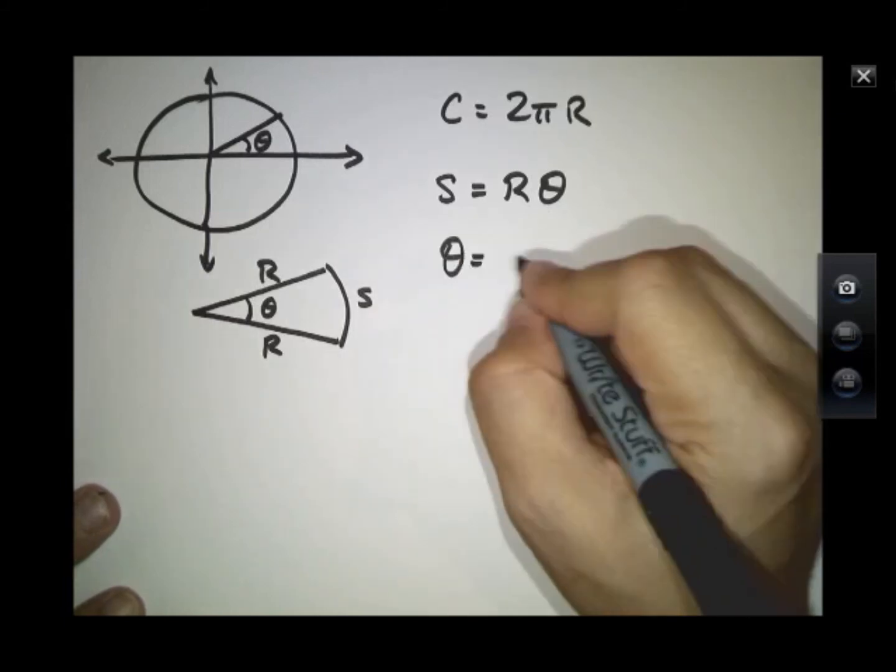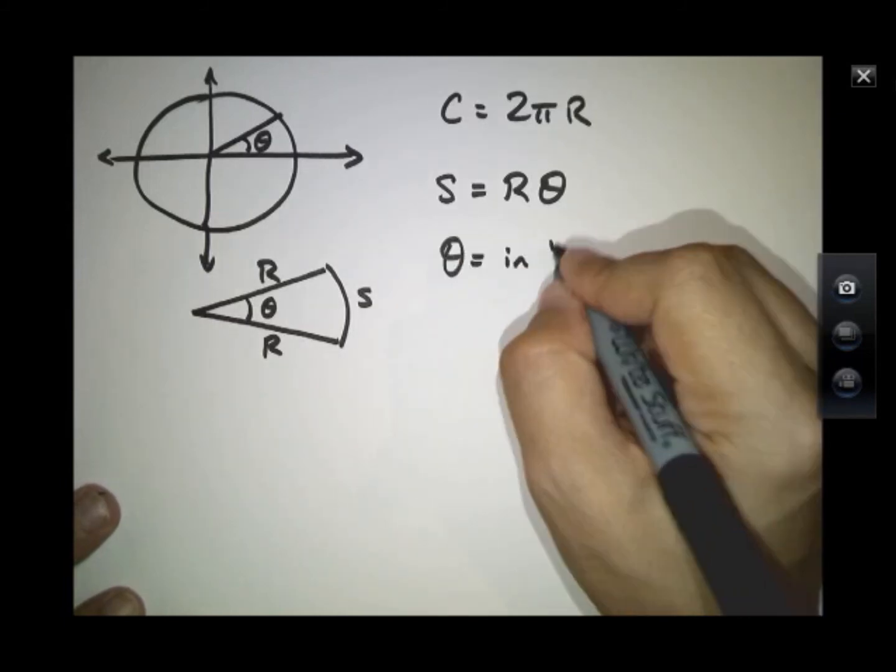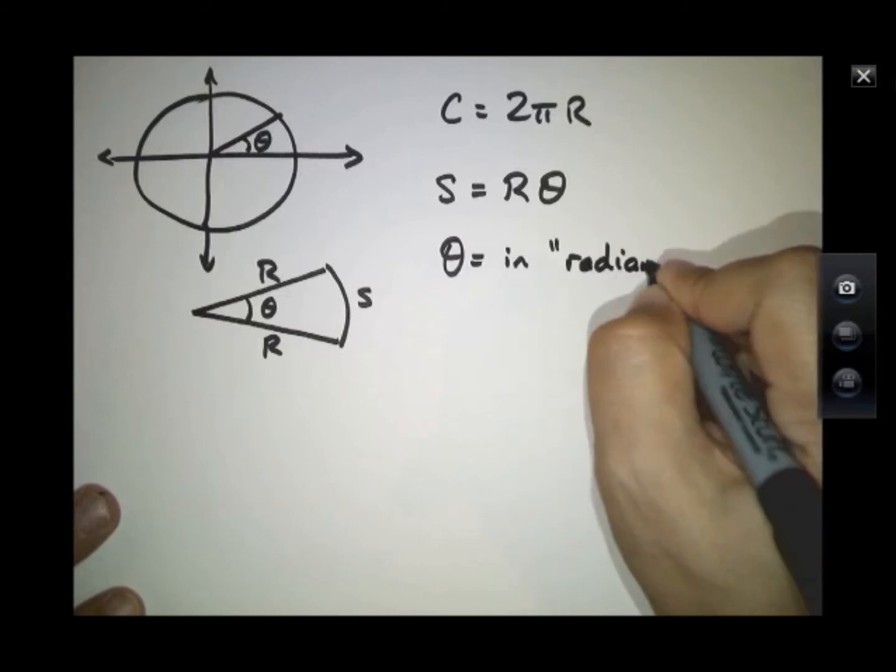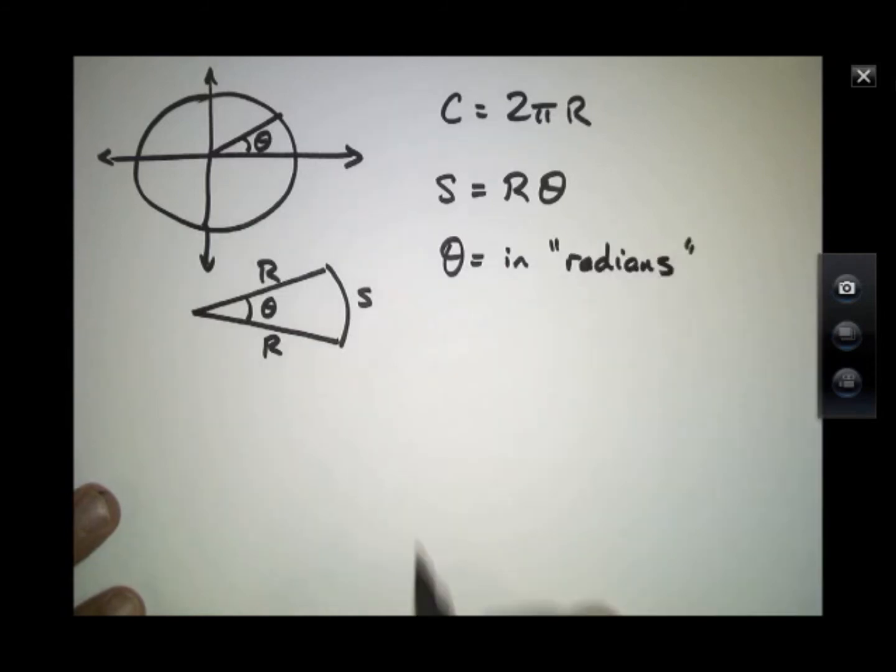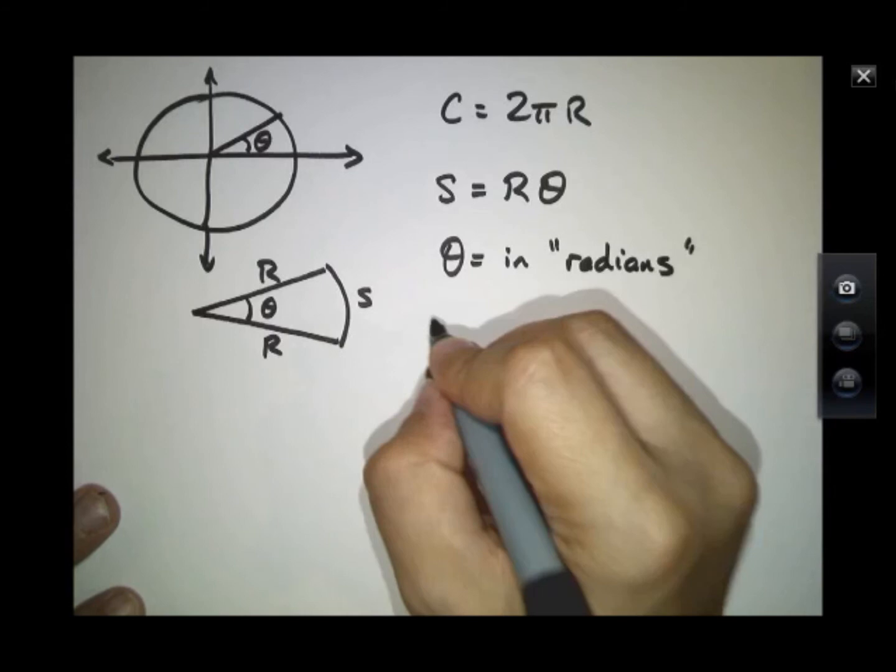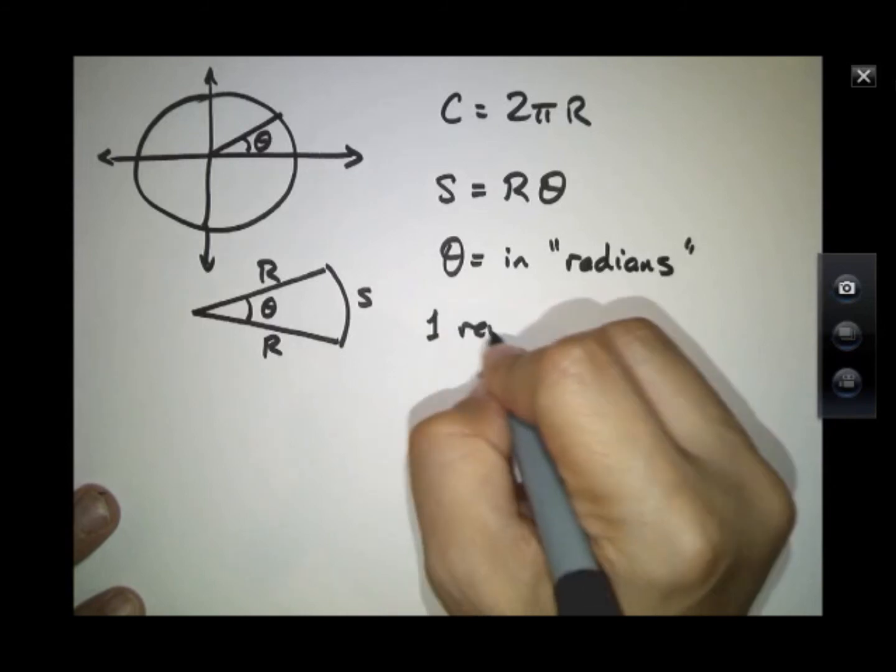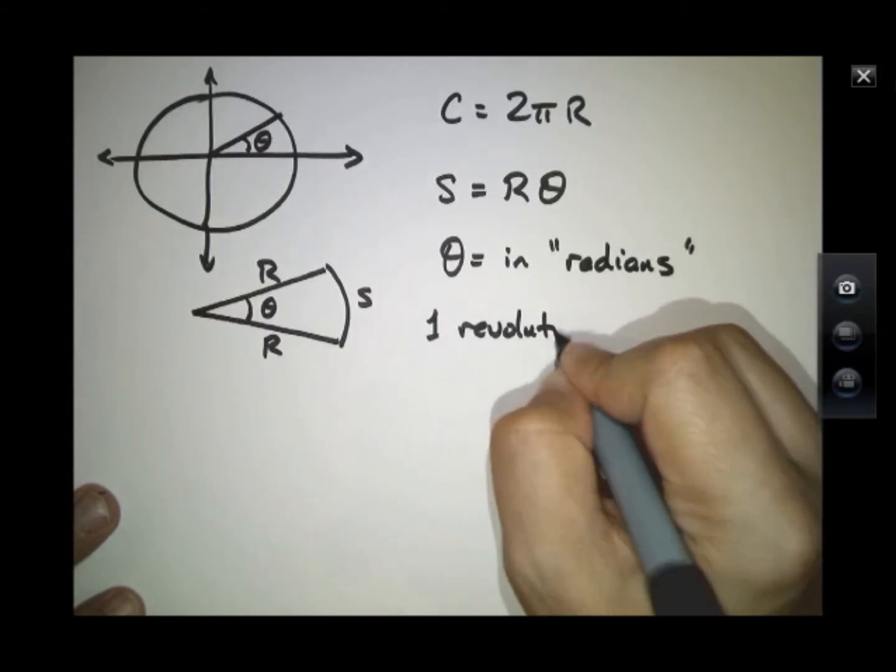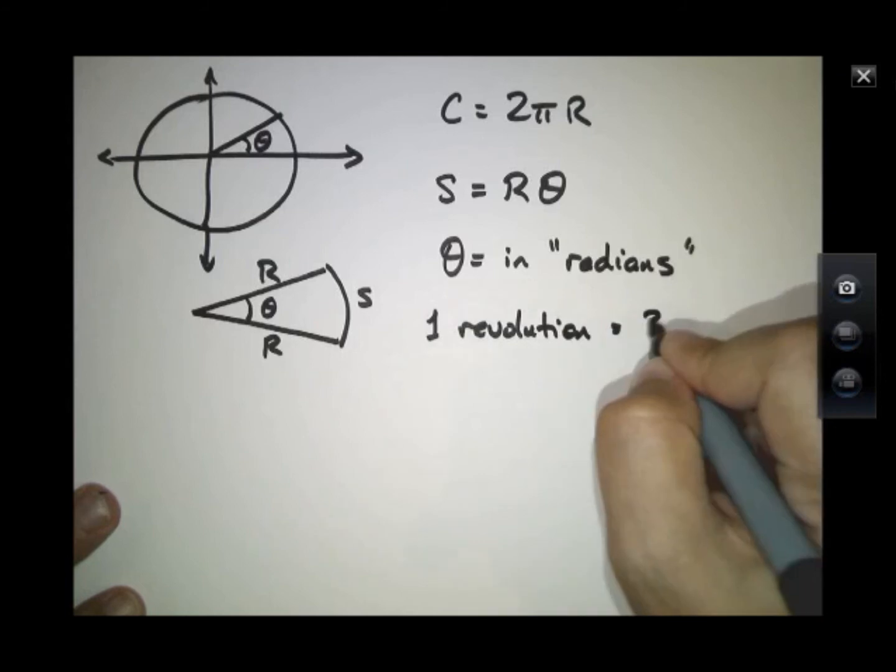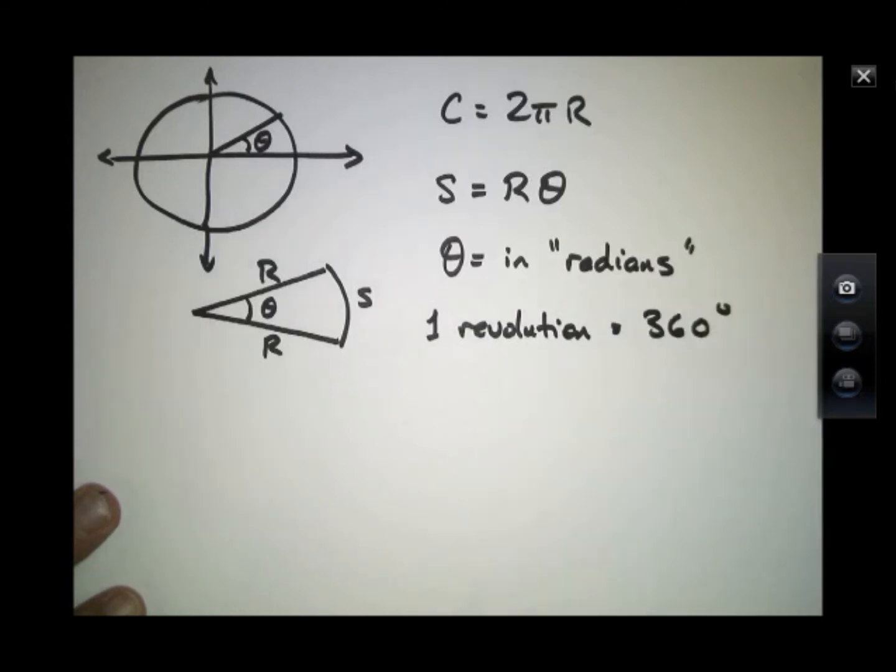One revolution, we know it to be measured in 360 degrees. It's also equal to 2 pi radians.